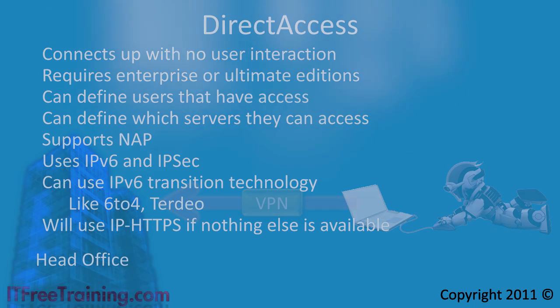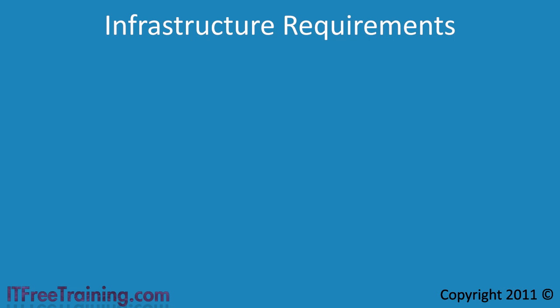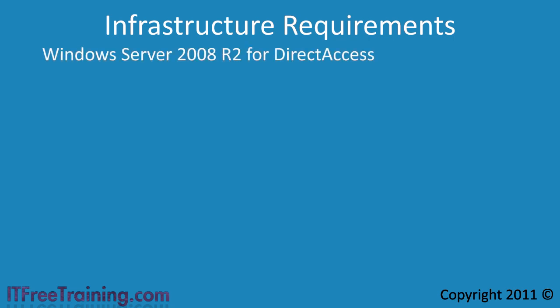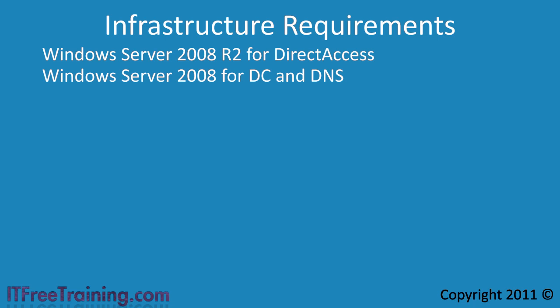To start using direct access you need to meet quite a lot of requirements. First, you need on the back end to be running Windows Server 2008 R2 — unfortunately Windows Server 2008 does not support direct access. You also need a Windows Server 2008 or 2008 R2 domain controller, a DNS infrastructure, and a public key infrastructure to provide the certificates used by direct access to create the IPsec connection.